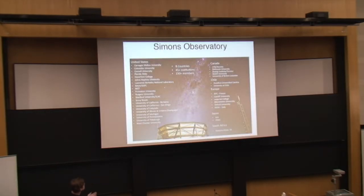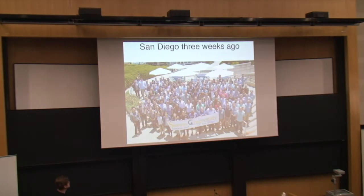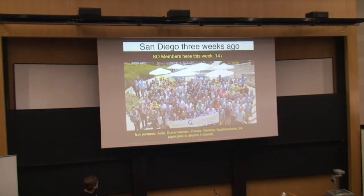So this is a merger of the ACT and POLARBEAR slash Simons Array teams coming together and working together. As such, there are many members, so 150 members from institutions all around the world. Here is a photo of a recent collaboration meeting, and I played Where's Waldo with this photo, and I found that there are 14 Simons Observatory members at this conference this week, and each of them have their own regime of expertise, so don't just ask me about Simons Observatory, you have 13 other people that you can chat with about this.